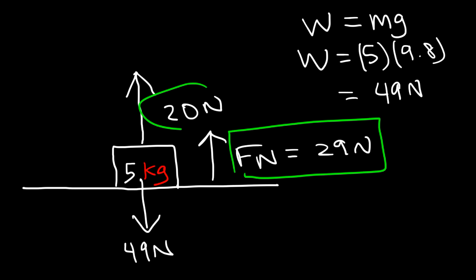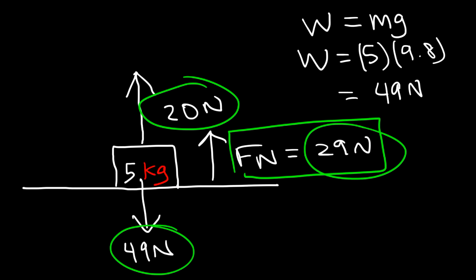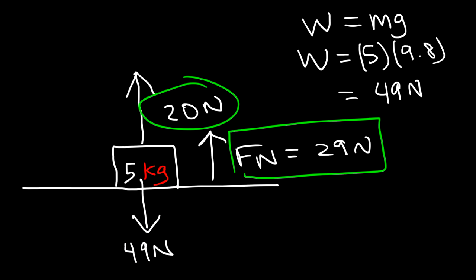The total upward force — 20 plus 29 — must add to the total downward force in order for the forces to be balanced and for the 5 kilogram object to remain in equilibrium, because it's currently at rest. So anytime you try to lift up an object with a rope, the normal force will decrease. If you press it down against the surface, the normal force will increase. It's important that you know how to set up a free body diagram and mathematically set up an equation to calculate different types of forces.